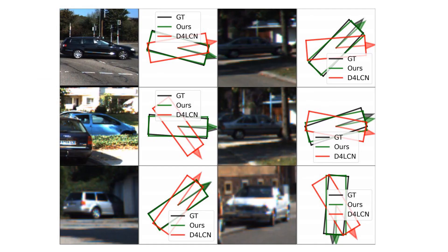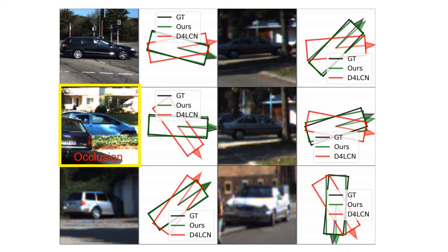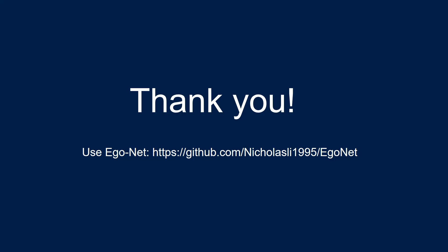Here are some input instances along with the bird's-eye-view vehicle poses. EgoNet can predict correct vehicle poses under challenging illumination even when the appearance change is small. EgoNet is also robust to partial occlusion thanks to the part-aware definition of the IGRs. Thank you for watching this video, and EgoNet is available at the following link.